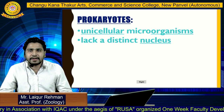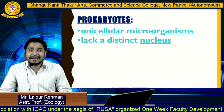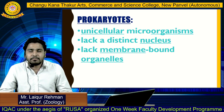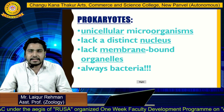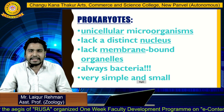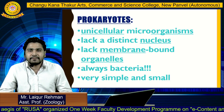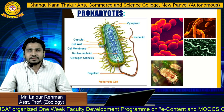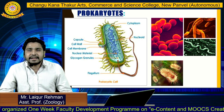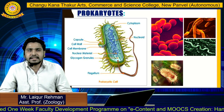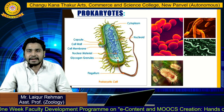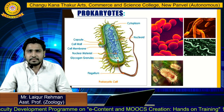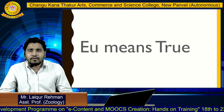Prokaryotes are basically unicellular microorganisms. They lack a distinct nucleus, they lack membrane-bound organelles, and they are always bacteria — very simple and small. Here you can see well-defined diagrams of prokaryotic cells.